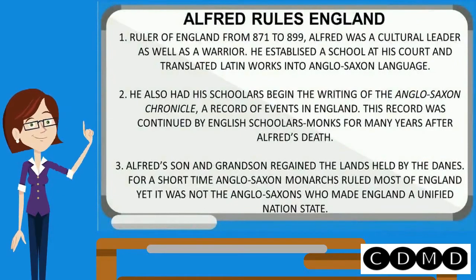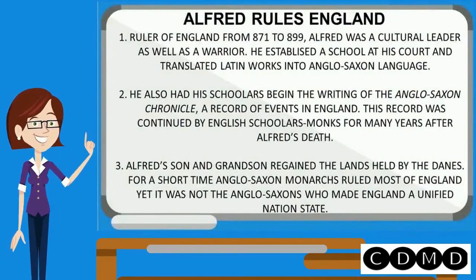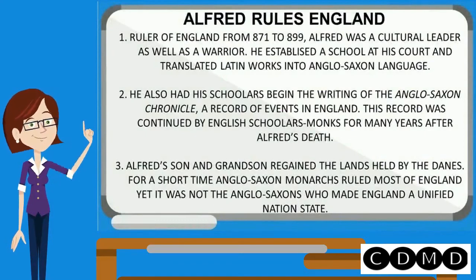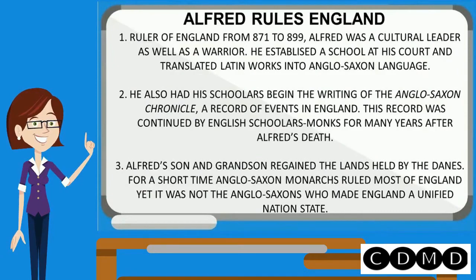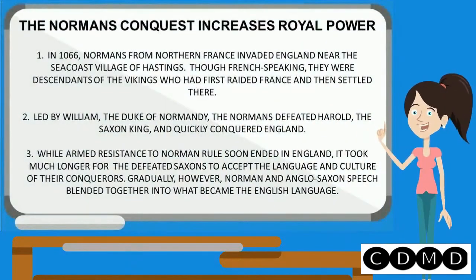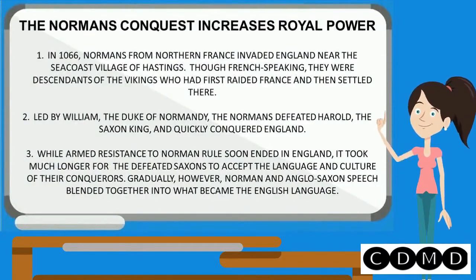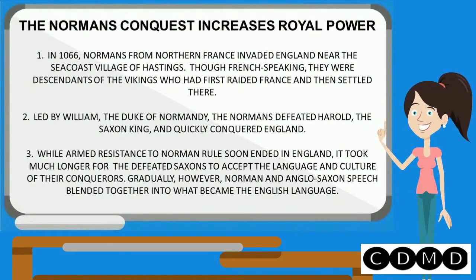Alfred rules England. Ruler of England from 871 to 899, Alfred was a cultural leader as well as a warrior. He established a school at his court and translated Latin works into the Anglo-Saxon language. In 1066, Normans from northern France invaded England near the seacoast village of Hastings. Though French-speaking, they were descendants of the Vikings who had first raided France and then settled there.